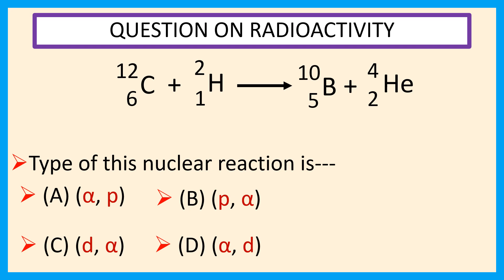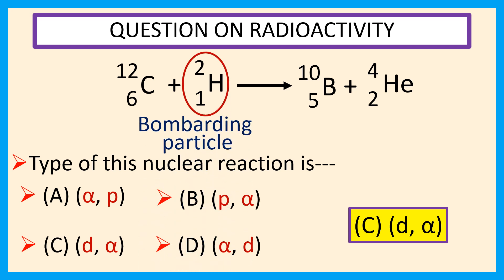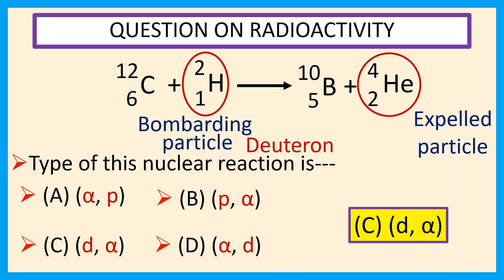The answer is C, D alpha. In this nuclear reaction, the bombarding particle is the deuterone and the expelled particle is alpha. So the type of this nuclear reaction is D alpha.